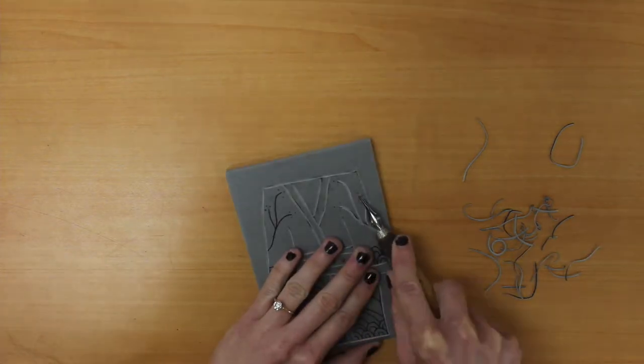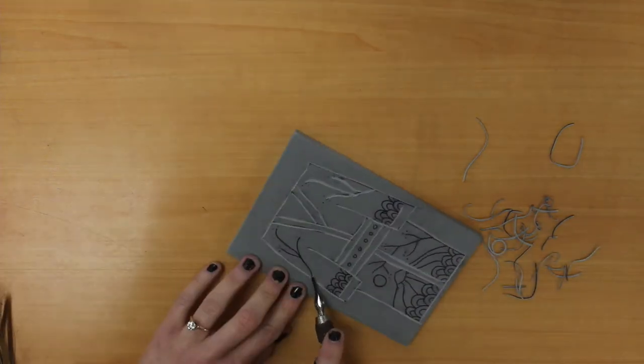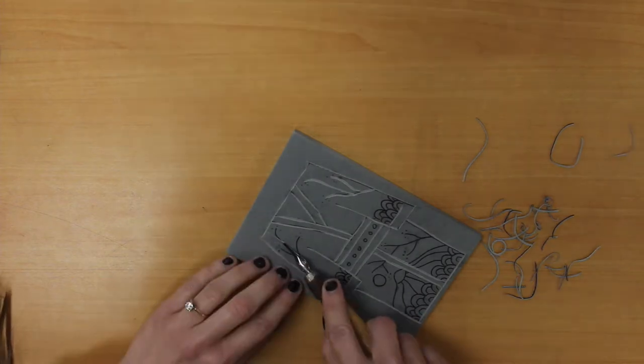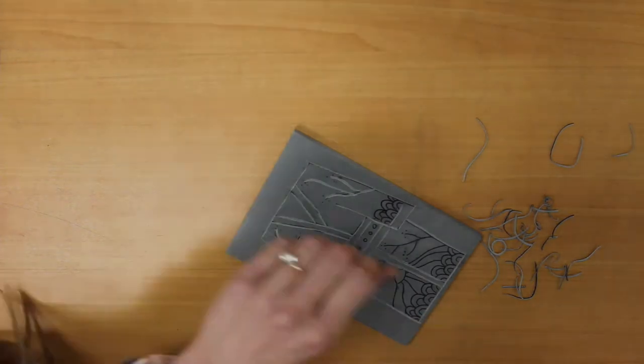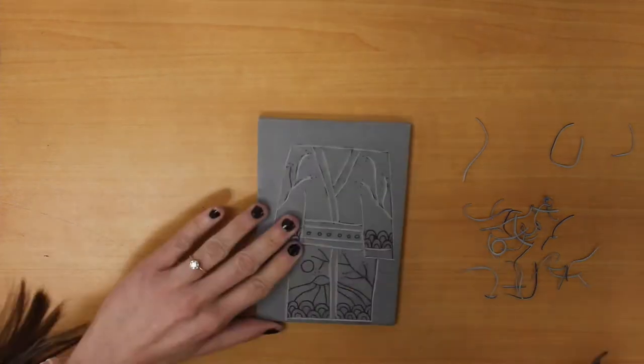Let's go ahead and pick up where we left off from last time. So remember we want to go ahead and use our number one gouge for going through and carving out the details that we made on our Japanese kimono.